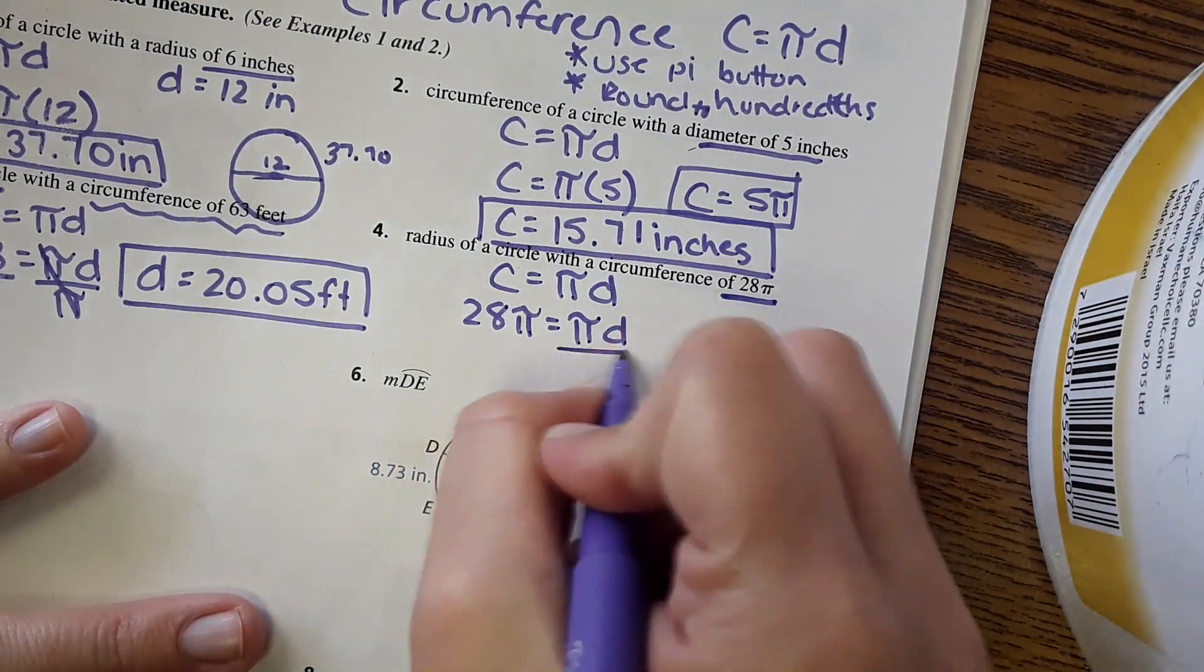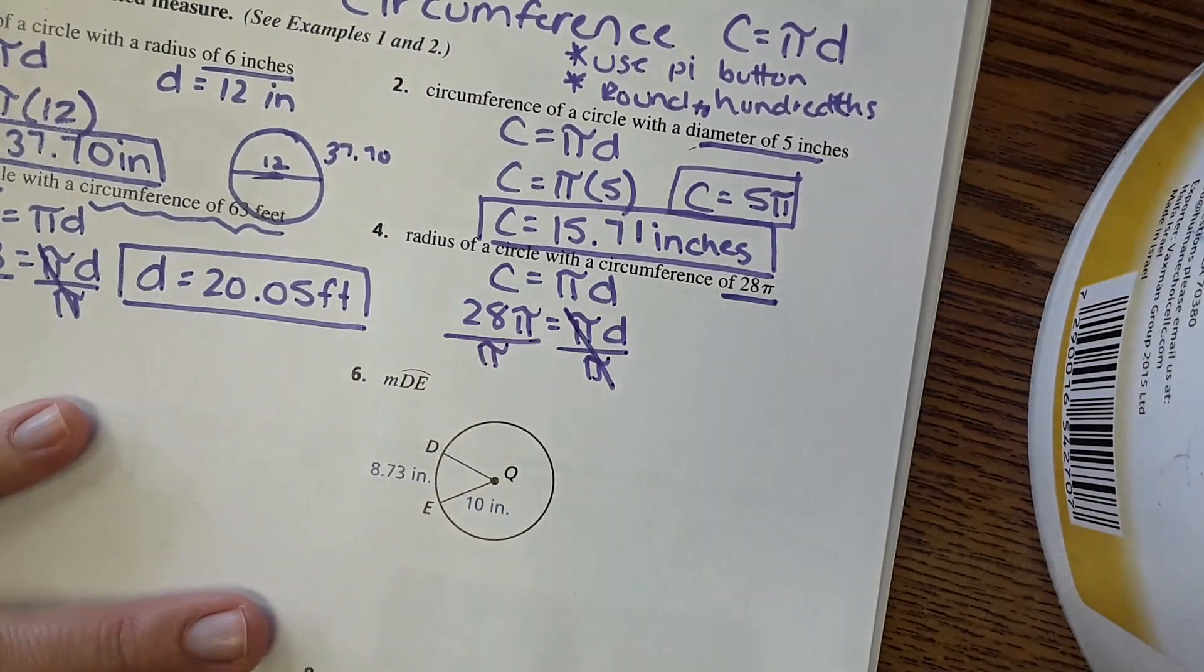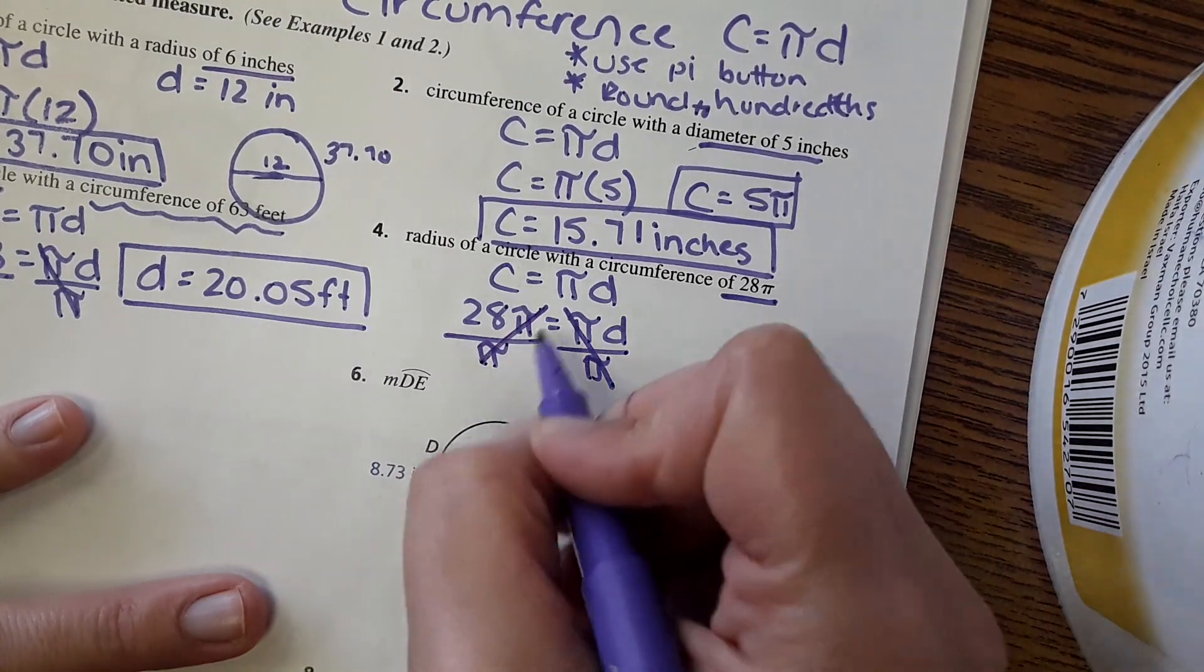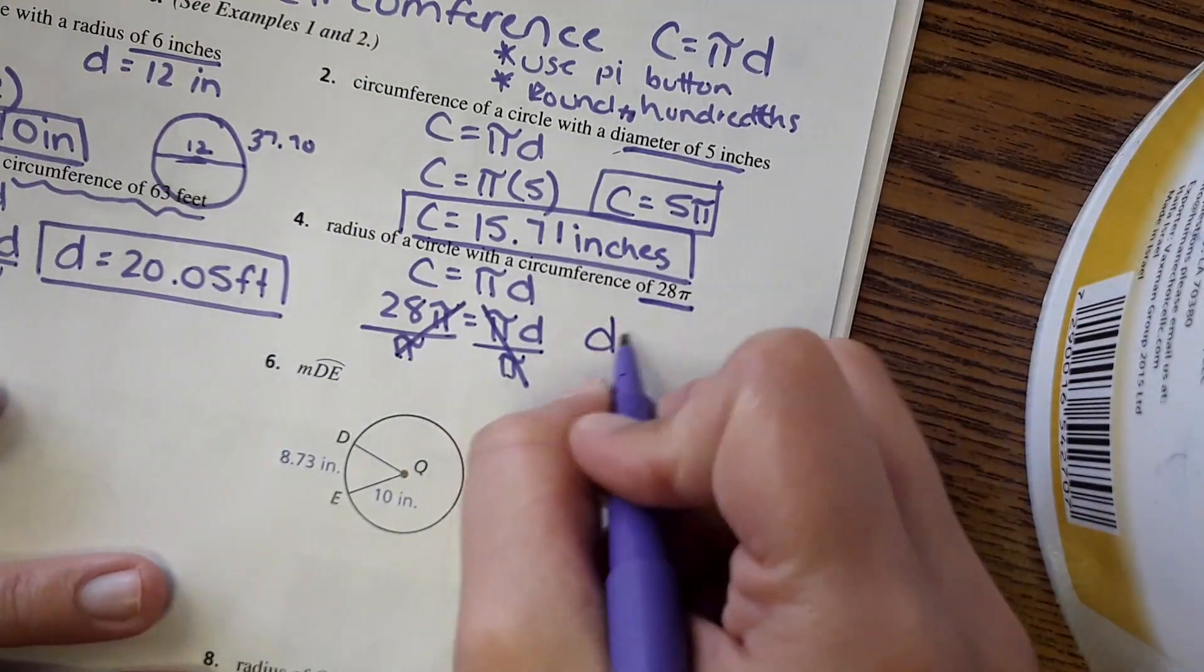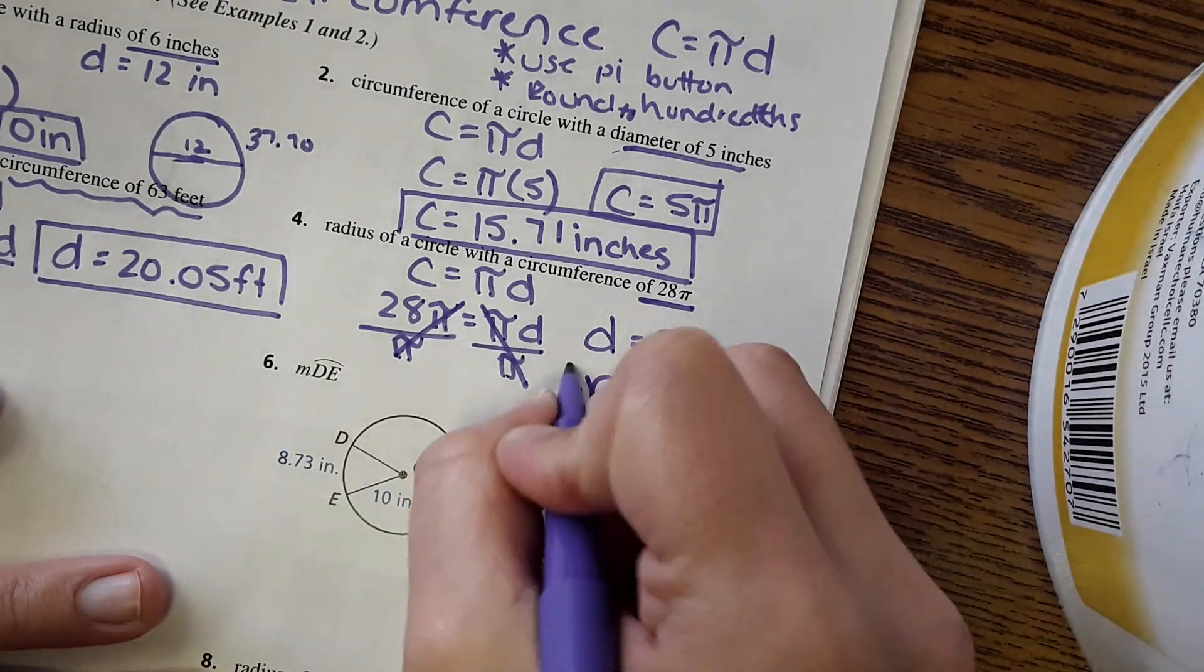So to get D by itself, divide both sides by pi. And then pi divided by pi is just one, that'll cancel over on this side as well, and diameter equals twenty-eight. Which the radius would then be half of that, which is fourteen.